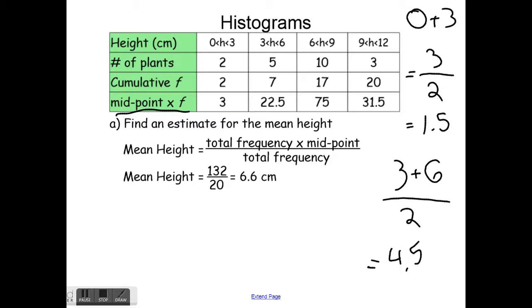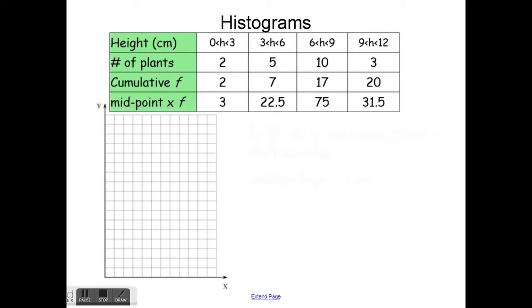So that is how we find our mean height. Our mean is 6.6 centimeters. Now for part b: drawing the cumulative frequency curve and finding the median.